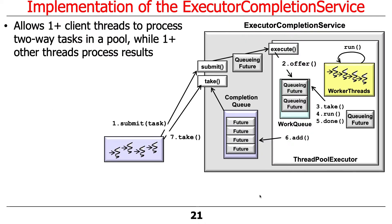As discussed before, you can have one or more threads submitting work into the ExecutorCompletionService. That work runs in the thread pool executor connected to the ExecutorCompletionService. As results finish, the completed futures are placed on the completion queue so one or more threads can take them off. You can have a pool of threads pulling results, a pool submitting work, and a pool doing the actual processing.